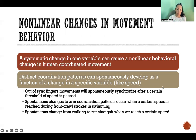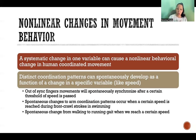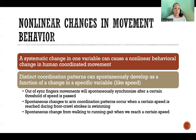When we apply that concept in movement behavior, a systematic change in one variable can cause a non-linear behavioral change in human coordinated movement. In the boiling water example, the one variable that's changing is the temperature — that's the systematic change. The temperature is increasing, but then suddenly there's an abrupt change to a state of boiling. Distinct coordination patterns can spontaneously develop as a function of a change in a specific variable, and a common one we use here is speed.